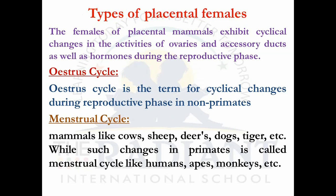One more important topic: placental mammals. The placenta is an intermediate tissue between the fetus and the mother's uterus — it is the most important characteristic feature of mammals. Mammals are of three types: egg-laying mammals, marsupials, and placental mammals. Placental mammals exhibit two kinds of important reproductive cycles. The placental females exhibit cyclic changes in the activities of ovaries and accessory ducts as well as hormones during the reproductive phase — these are the oestrus cycle and the menstrual cycle.